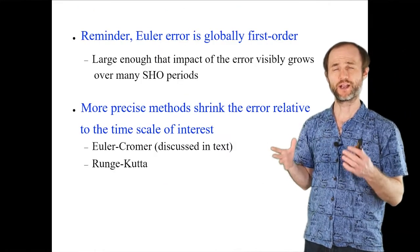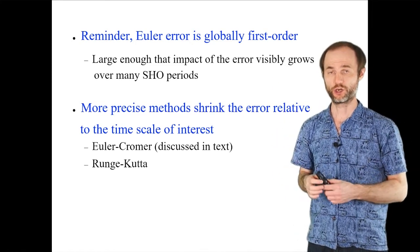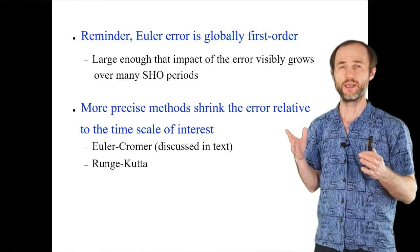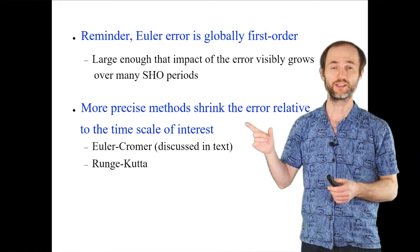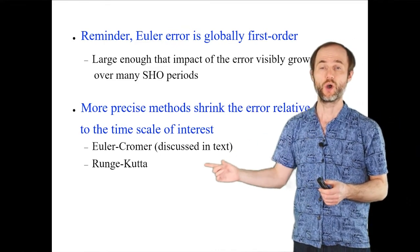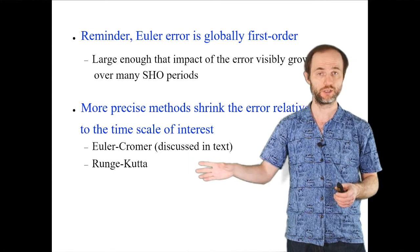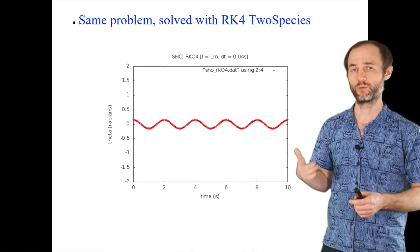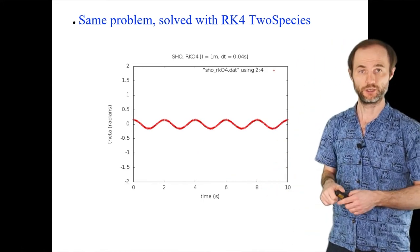The Euler method has first-order global truncation error — the error scales as delta t to the first power. It's much better if error scales as a higher power of delta t so it shrinks faster relative to the time of interest. Methods that achieve this include the Euler-Cromer method (discussed in the textbook) and Runge-Kutta of second or fourth order. Solving the same problem with RK4 brings back the correct physical behavior, and we can declare victory.